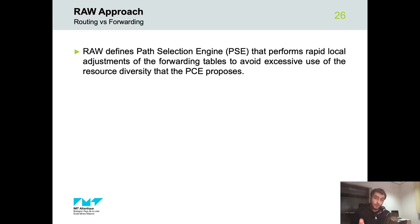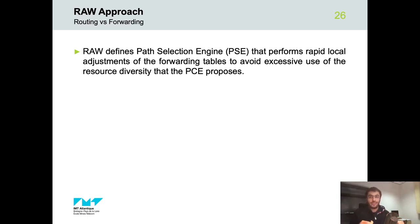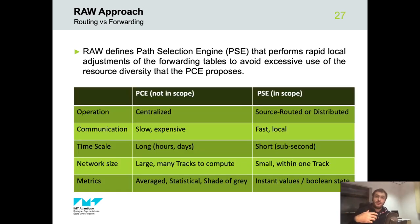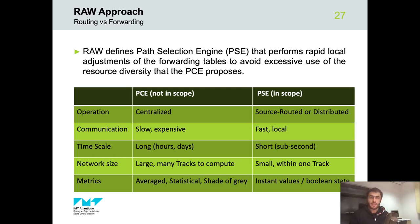The RAW problem is to decide, within the redundant solutions proposed by the PCE, which will be used for each packet to provide a reliable and available service while minimizing the waste of resources. There is thus a desire to separate the long-term computation of the route from the short-term forwarding decision. The RAW working group will define the Path Selection Engine, PSE, that performs rapid local adjustments of forwarding tables to avoid excessive use of the resource diversity that the PCE proposes. RAW will be in charge of the forwarding plane to make per-packet decisions, separating the protocols and metrics used at both scales. Routing can operate on long-term statistics such as delivery ratio over minutes to hours, while the RAW forwarding decision is made at packet speed using information pertinent at the present time.